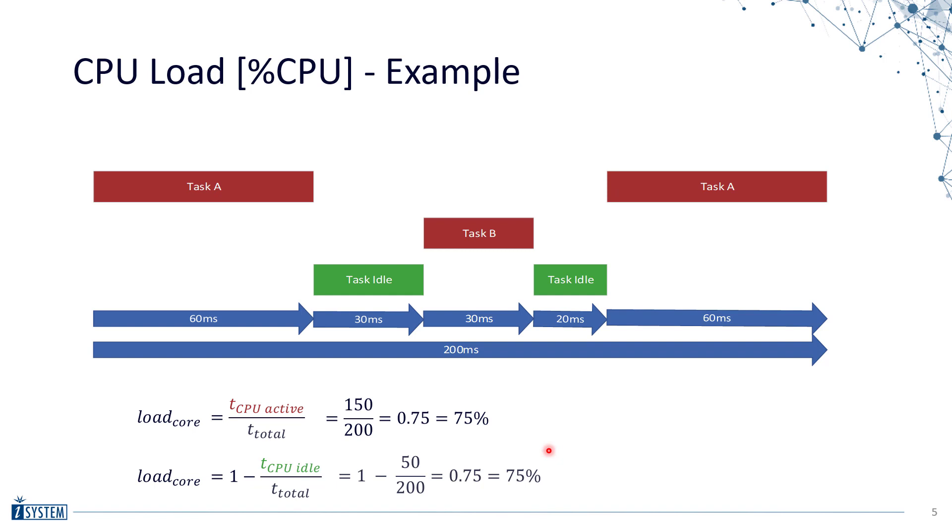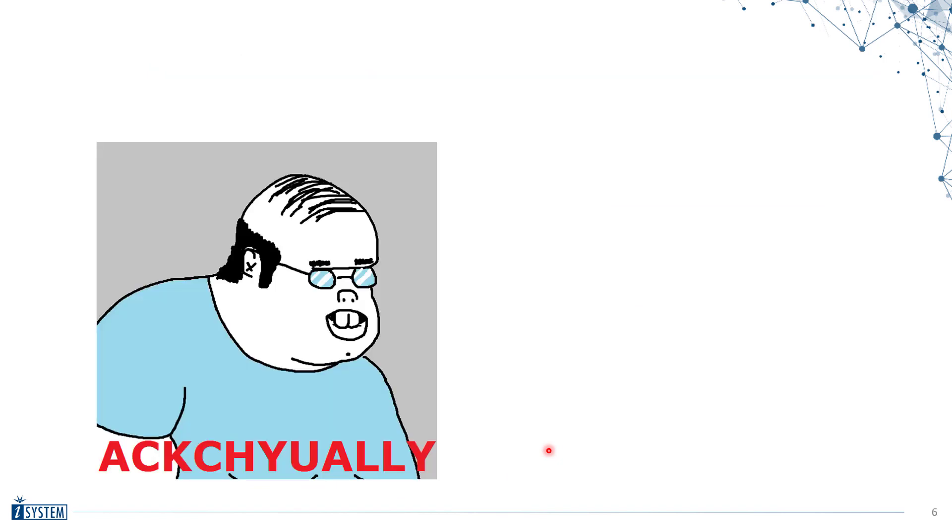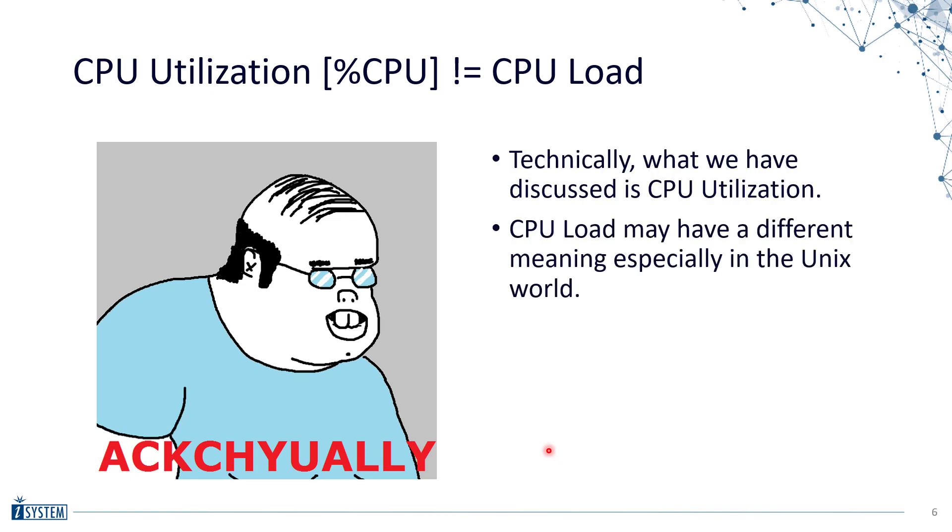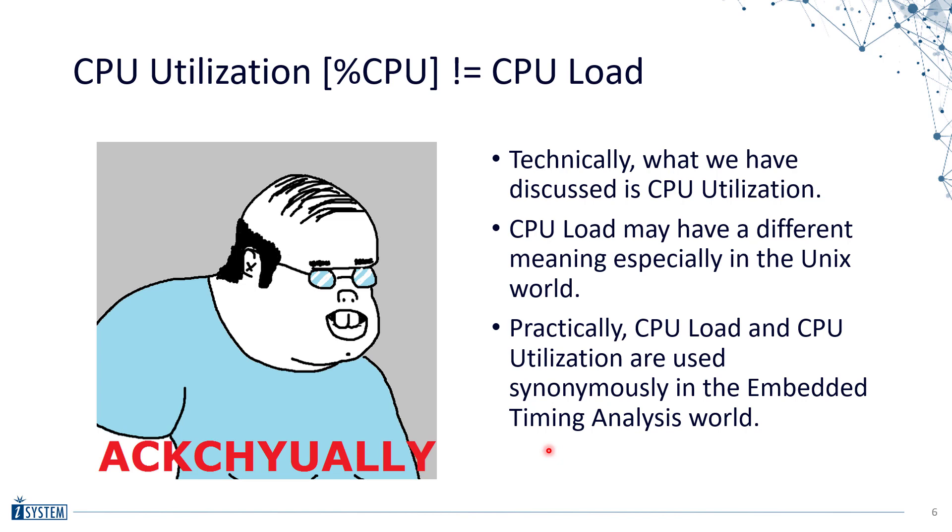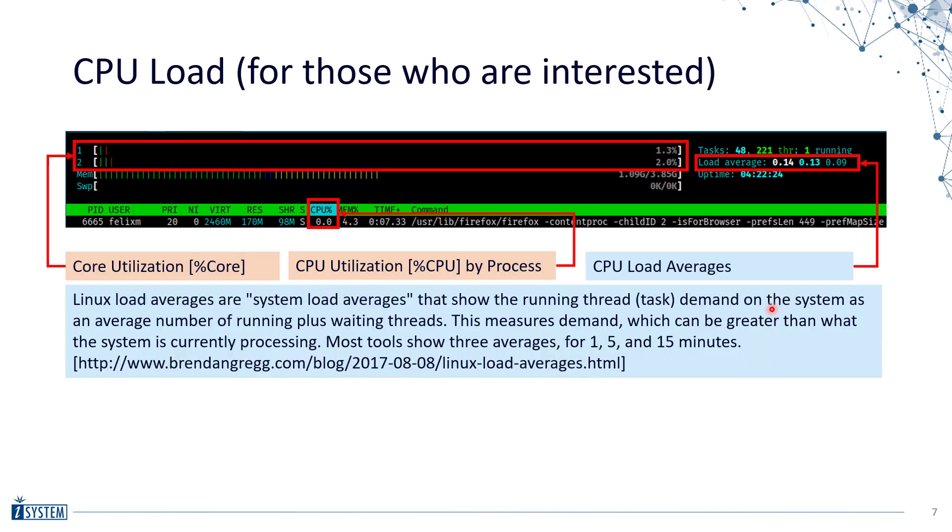So now you understand how we calculate core load for an embedded system. Now there's one caveat here. Actually CPU load is not really what we have just shown. What we've just shown is CPU utilization. CPU load may have a different meaning especially in the Unix world and on Linux server systems. In the embedded world these two terms are used as synonyms or interchangeably, but you have to be aware that there might be a different meaning depending on the context.